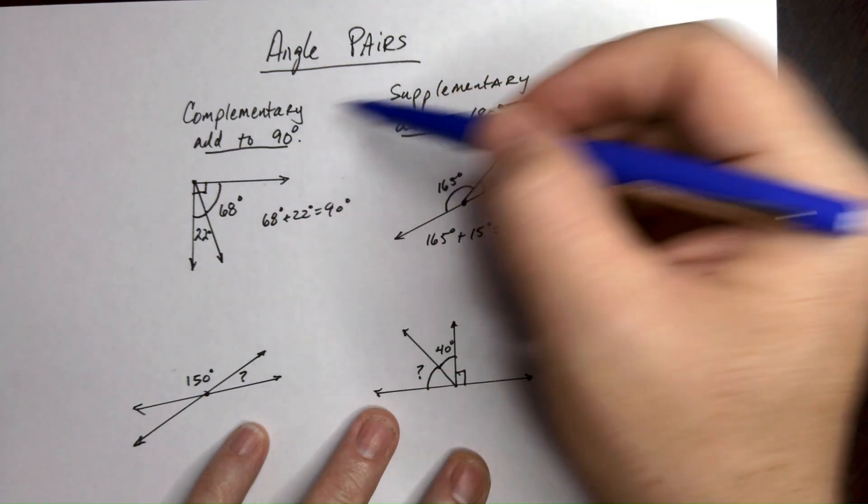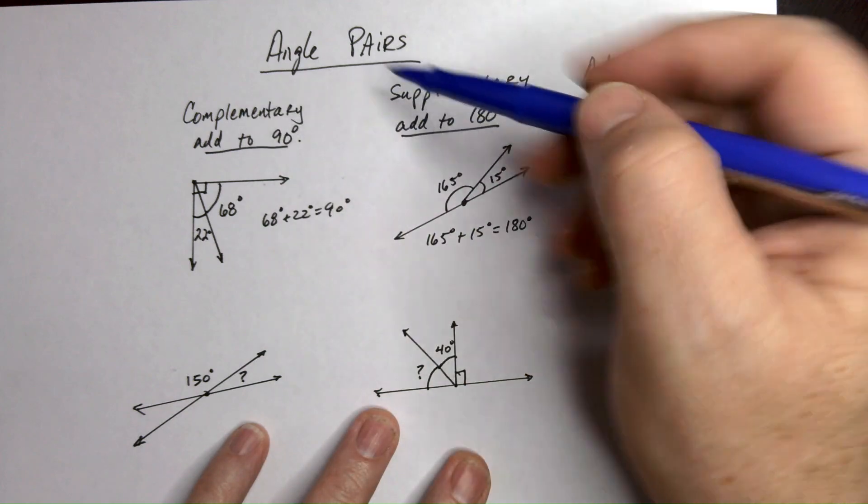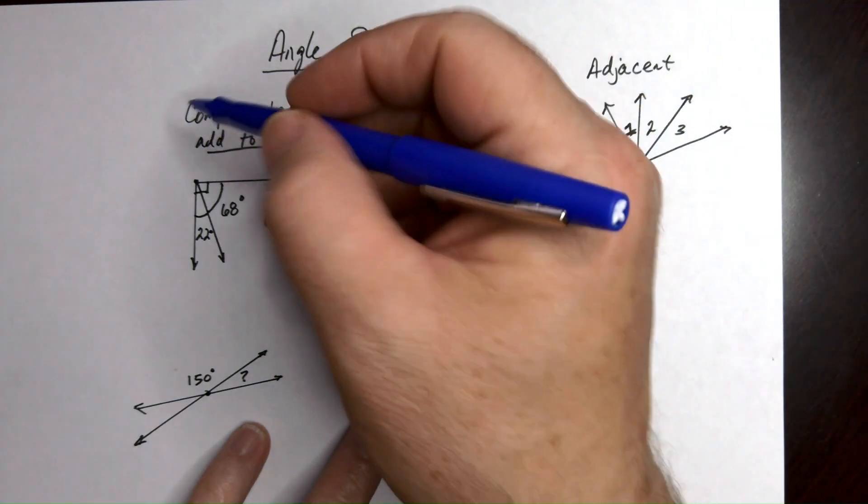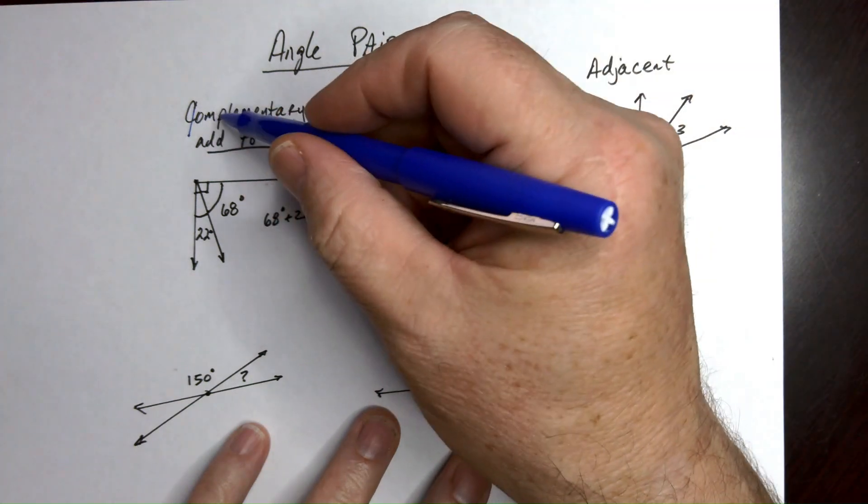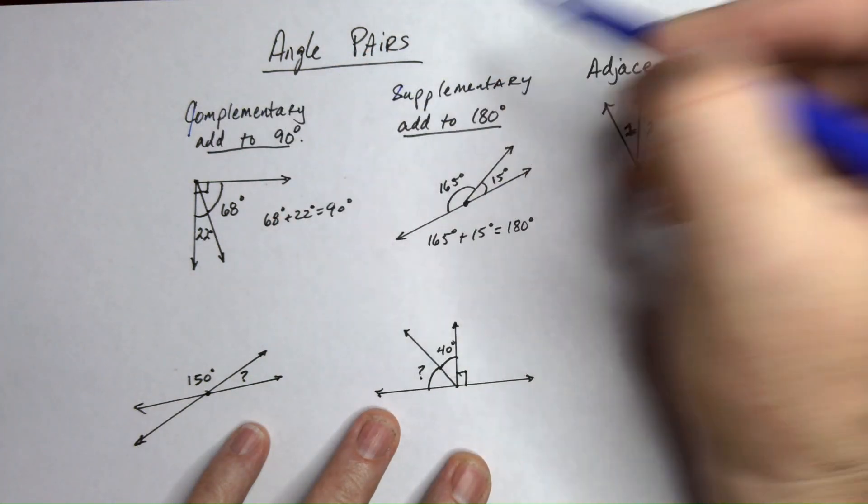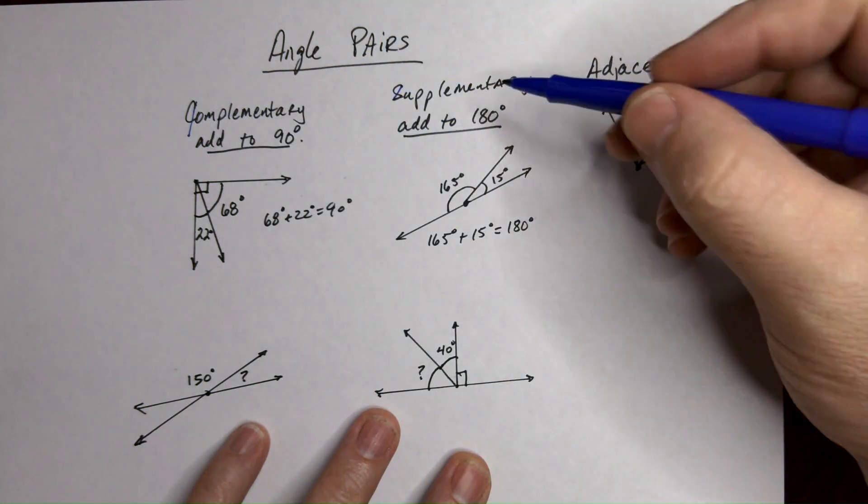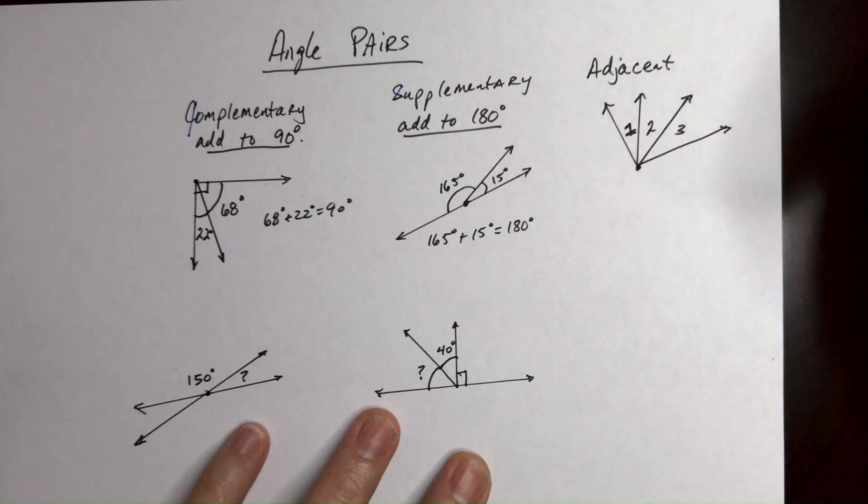Now the hardest part I think about this is remembering which one means which. So I got a little trick. You see the CO right here? You can make that look like a 90. So complementary adds to 90 and you can make the S look like an eight, they add up to 180. So that's pretty cool.